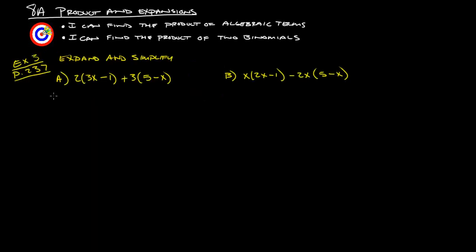Next set of examples from page 237 is expand and simplify. Basically what this is asking us to do is distribute this through to both of these terms in here, and then simplify. So, 2 times 3x is 6x. 2 times negative 1 is negative 2. 3 times 5 is 15, and then 3 times negative x is negative 3x.